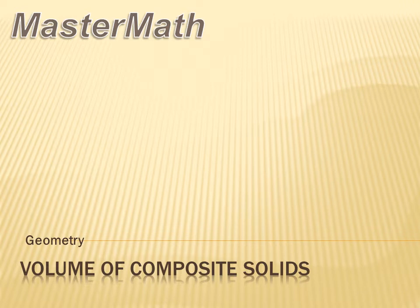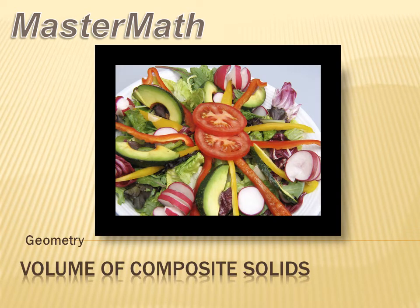Solids. No, I didn't say salad, although a composite solid is a little bit like a salad. In a salad you combine several ingredients to make a meal. A composite solid is also a combination, but instead of tomatoes, you may be using prisms or cones or pyramids.